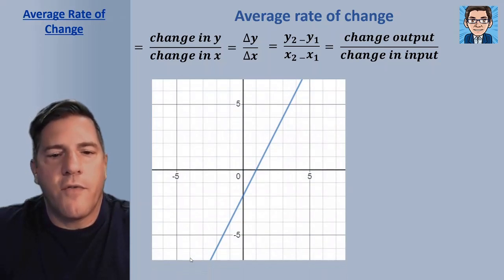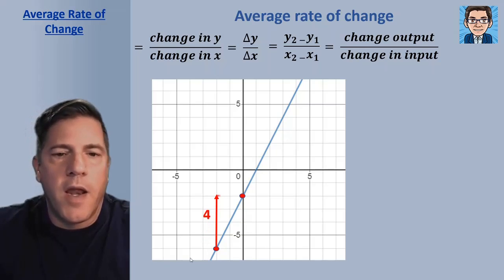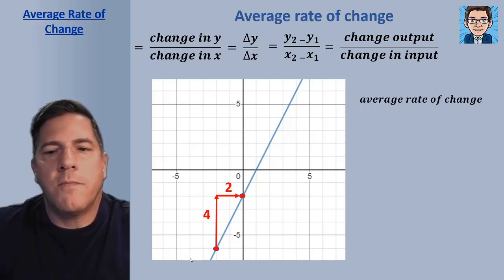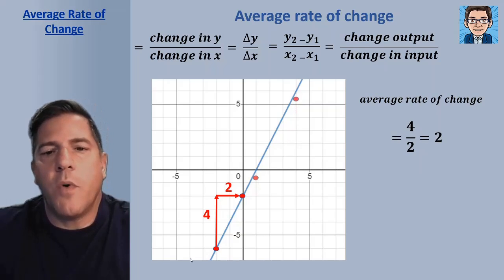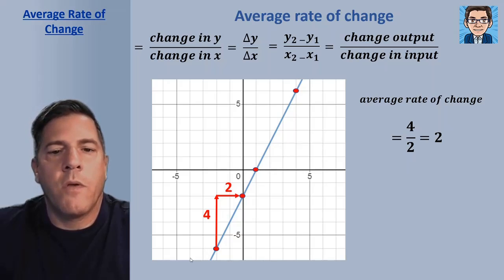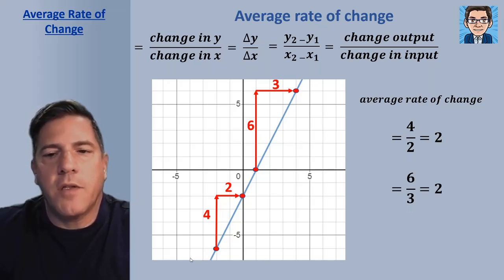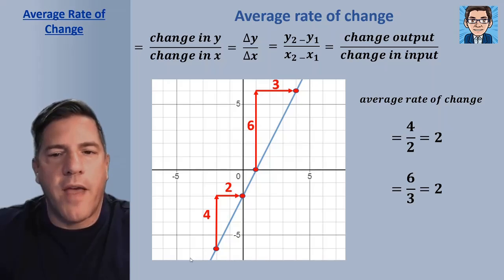Let's first take a look at that in a linear function. If we have two points on a linear function, we can see how much y changes — in this case it's 4 — and how much x changes — in this case it's 2. We divide those and get the average rate of change as 4 over 2, or just 2. Looking at two other points on the linear equation, we go up 6 and over 3, giving change in y of 6 and change in x of 3. Divide those and we get the same answer: 2. We can call this just the rate of change because it's the same anywhere on that function.